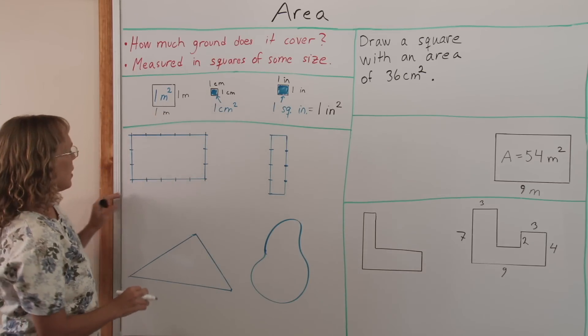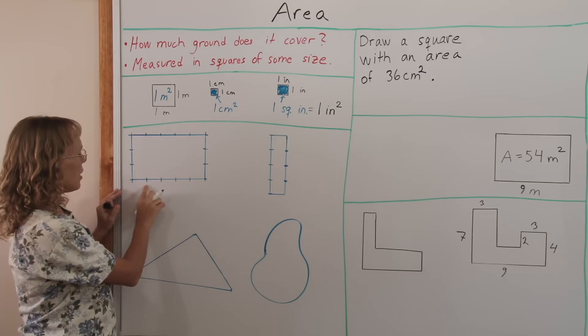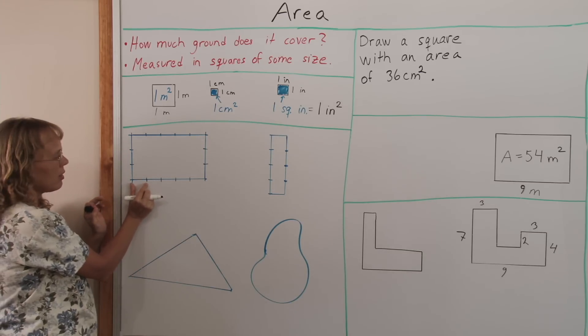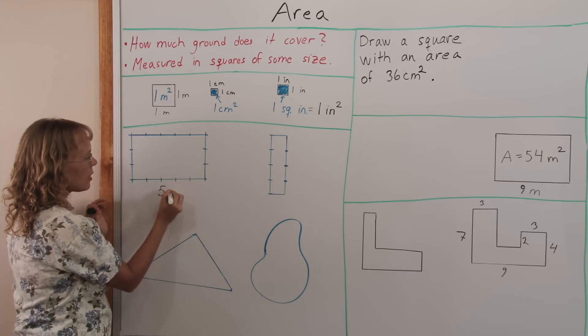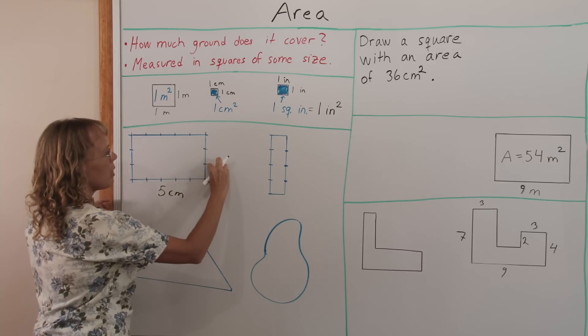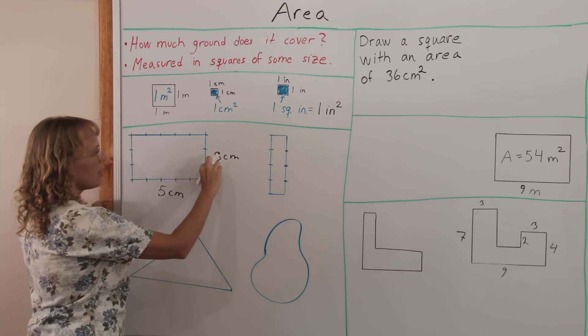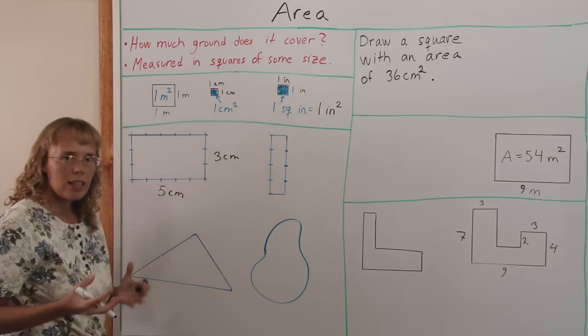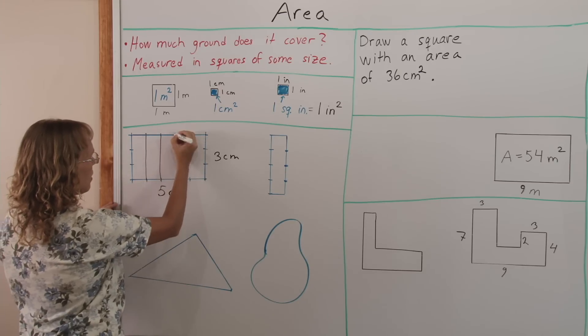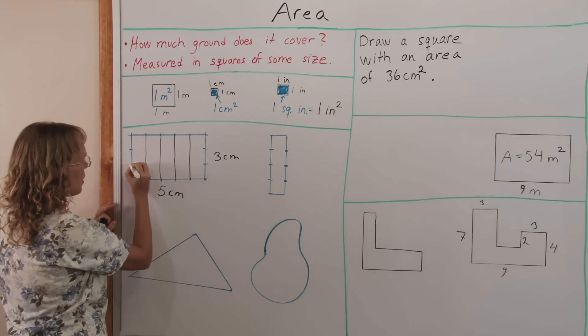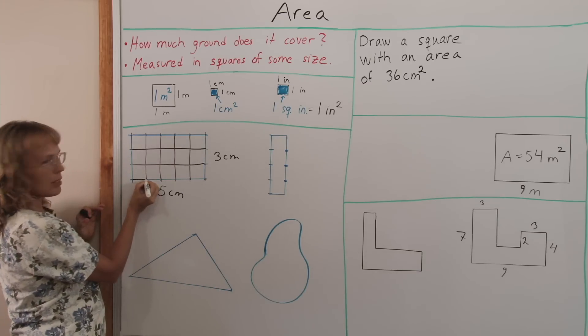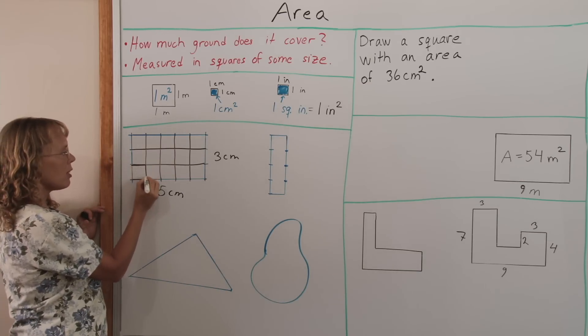Now here is a rectangle and if its side is measured in some units, let's say centimeters, I can count how many centimeters are here: 1, 2, 3, 4, 5, right? This side is 5 centimeters long. Here is 1 centimeter, another, 3rd, 4th and 5th. And this side here is 1, 2 and 3 centimeters. This side is 3 centimeters long and this is 5 centimeters long. I can now draw squares into this rectangle, like this, these lines here. Okay, now it's divided into squares. And since here is 1 centimeter and 1 centimeter, then this square here is 1 square centimeter, right?